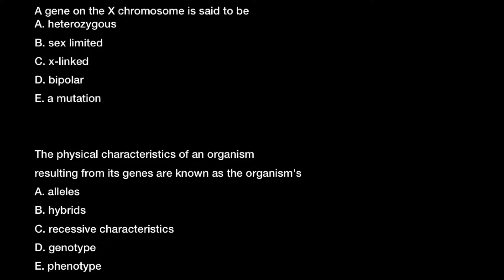A gene on the X chromosome is said to be — and here are five answers to choose from. I would start with answer E: a mutation. On the X chromosome there are about 2,000 genes, and of course we cannot say that all those 2,000 genes are mutated. So this is total nonsense, and we can cross out this answer.